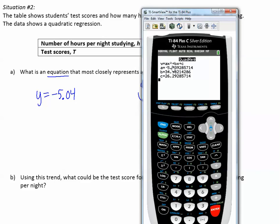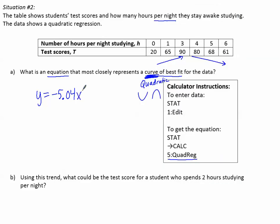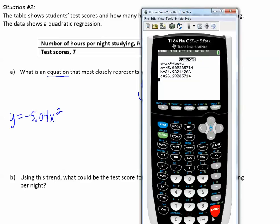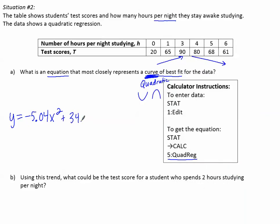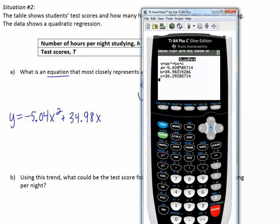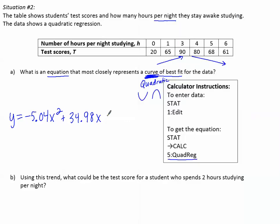The a is -5.039, so let's round to -5.04. Then it says x squared. Then it says plus bx. The b is 34.98, so 34.98x. And then plus c, c is approximately 26.29, so plus 26.29. And there is my equation.